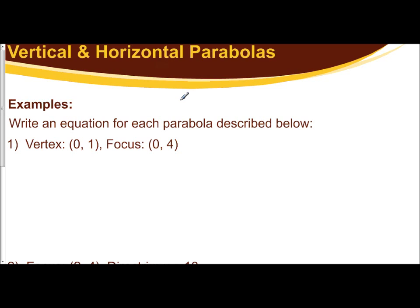In this first example, we are told we have a vertex for a parabola. We don't know if it's horizontal or vertical at (0, 1), and a focus at (0, 4). My advice is determine whether it's horizontal or vertical first, and I do that by just sketching a brief picture of what the graph would look like. So at (0, 1), I have my vertex, and at (0, 4), I have my focus. Well, this tells me that I am dealing with a vertical parabola.